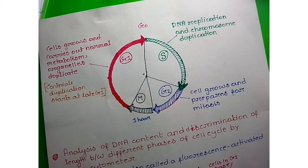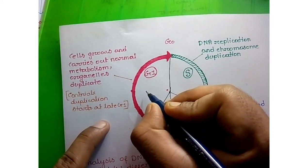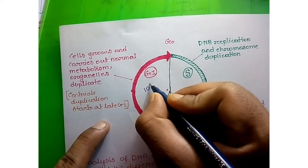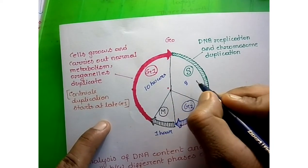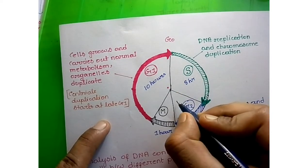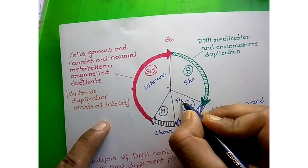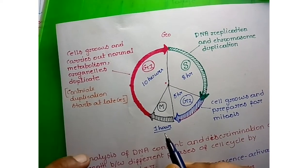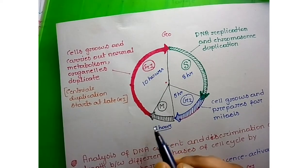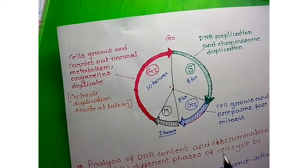G1 and G2 are the preparation phases for mitosis. G1 takes about 10 hours, S phase about 8 hours, G2 about 5 hours, and M phase only about 1 hour. So M phase consumes far less time than the other phases, even though many complex processes occur within it.